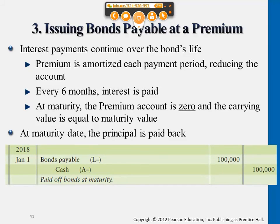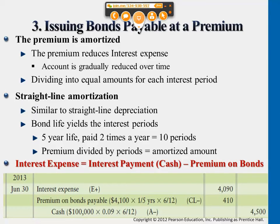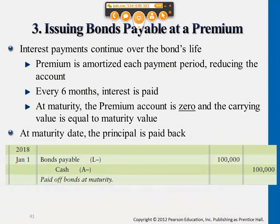For bonds issued at a premium, it's the opposite compared to the discount case. We basically borrow more money at the time of issuance because our interest rate is more attractive compared to other companies' bonds. So when we borrow more money up front, when we consider interest later, even though we're paying $4,500, we think of that additional money as reducing the interest expense actually recognized — so interest expense is lower than $4,500. We will journalize the same entry every half a year for 10 times, and then at the end when the bond matures, we pay back the original face value.